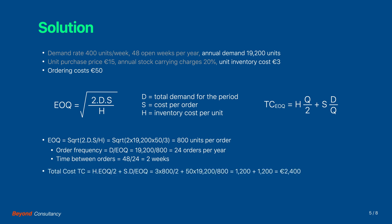The total cost at the optimal point is 2,400 euro. We note that in the optimal point the inventory costs are equal to the ordering costs.